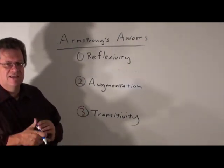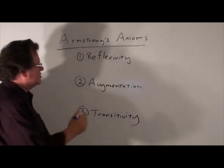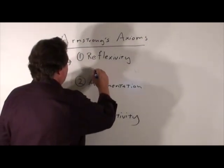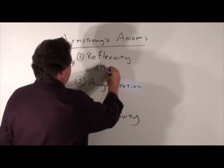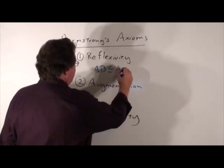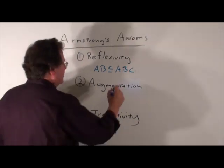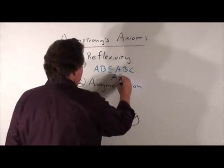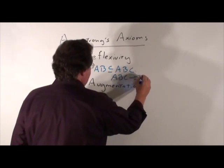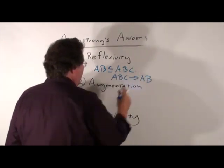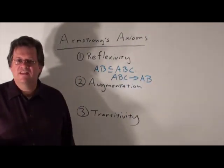What exactly is reflexivity? Think of it this way. If we have AB as a subset of ABC, where these are attributes in a relation, then we could say ABC functionally determines AB. That's reflexivity.